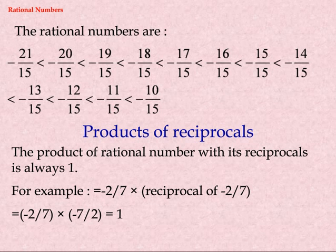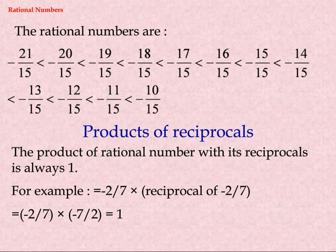The rational numbers between them are: minus twenty-one fifteenths, minus twenty fifteenths, minus nineteen fifteenths, minus eighteen fifteenths, minus seventeen fifteenths, minus sixteen fifteenths, minus fifteen fifteenths, minus fourteen fifteenths, minus thirteen fifteenths, minus twelve fifteenths, minus eleven fifteenths, minus ten fifteenths.